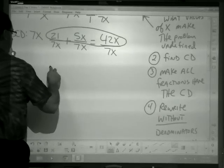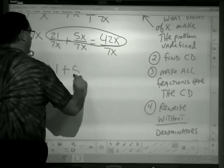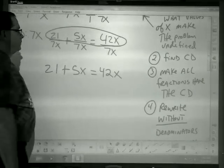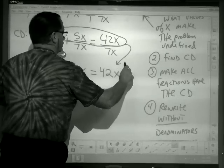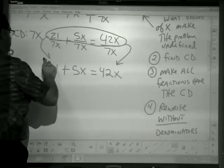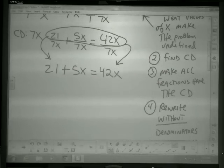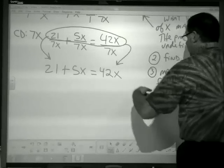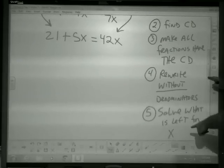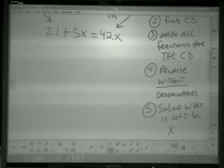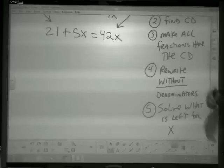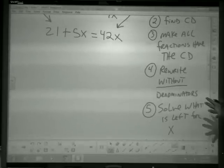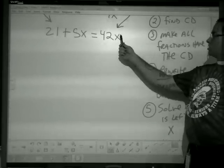Once you've made the fractions have all the same denominators, then rewrite it without the denominators. So I'm going to write 21 plus 5x equals 42x. So that just is the next piece. Just the tops. That's nice and easy. Solve what is left for x. That's step 5.